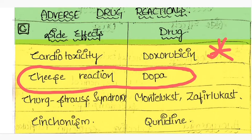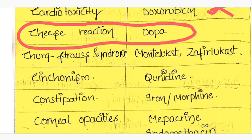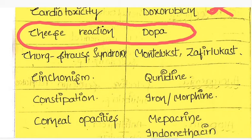Churg-Strauss syndrome is caused by montelukast and zafirlukast. This is very very important and they are a specific side effect for these drugs.